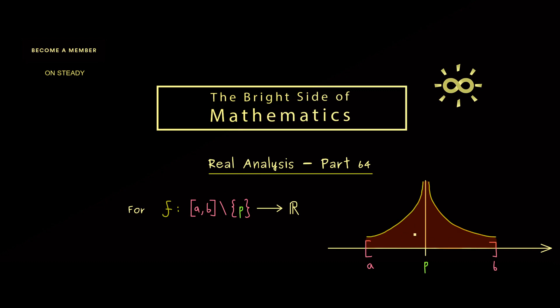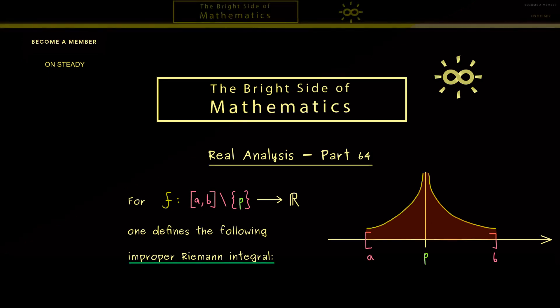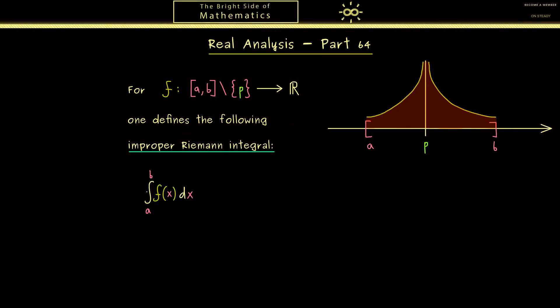Therefore, the whole area is finite if both areas here are finite. This means that we can define an improper Riemann integral for f by using the definition from the last video. And then the integral symbol for the function f also makes sense. We simply define it as the sum of two limits. The first limit should give us the left-hand side of the area, which means we integrate from a to p minus epsilon. And for the second limit we want to have the right-hand area, and therefore we integrate from p plus epsilon to b. So you see what we really need is that the one area is finite and the other one. In other words, both limits have to exist such that the improper Riemann integral here makes sense.